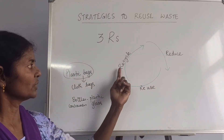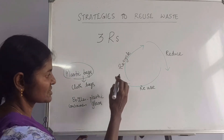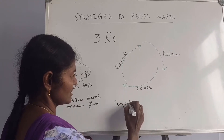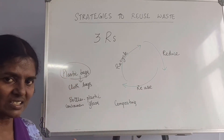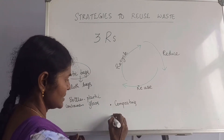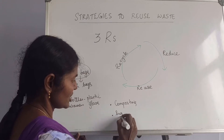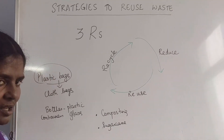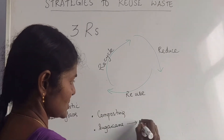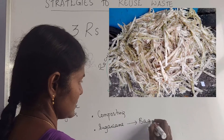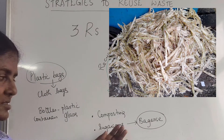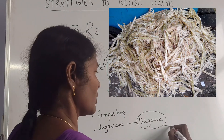Then we go to recycling. When you come to recycle, composting — which we just now saw — is to recycle all the waste, kitchen waste, into biomanure. That is one example of recycling. The second example: you take sugarcane. When we crush sugarcane and crystallize sugar out of it, the residue that is left is called bagasse, and this bagasse can be used to make paper.